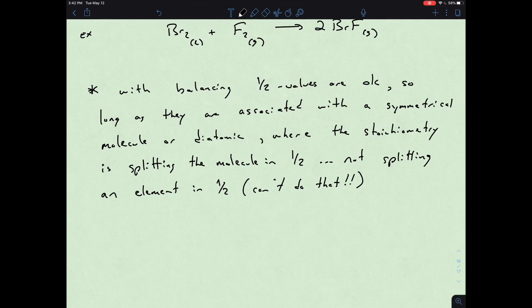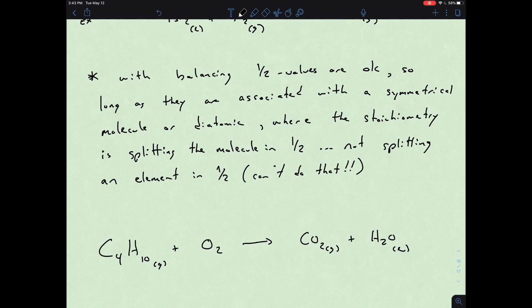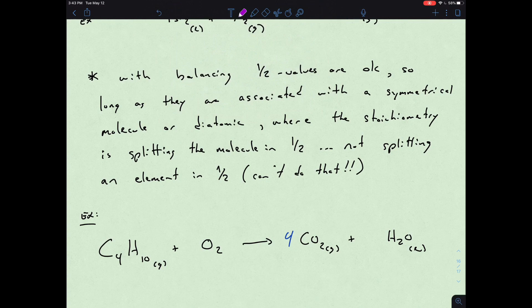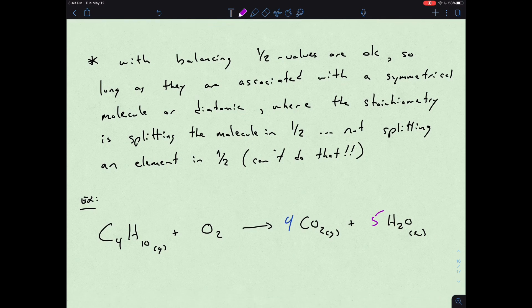As an example of that, we could look at the combustion of maybe butane, C4H10O2. We would need to have four CO2s for our carbons to be balanced out. If we look at our H2O, we would have to have five of those to balance out with the 10 on the left. And if you look at how many we have here, we have nine oxygens as a result.